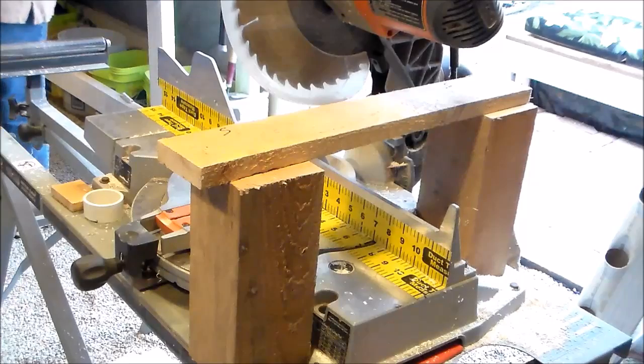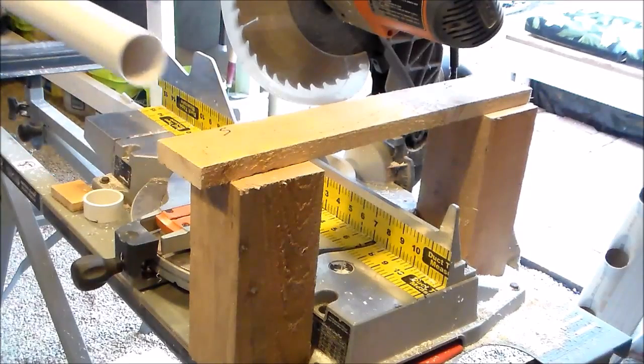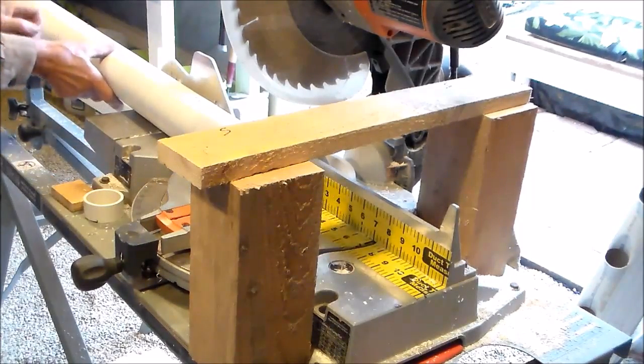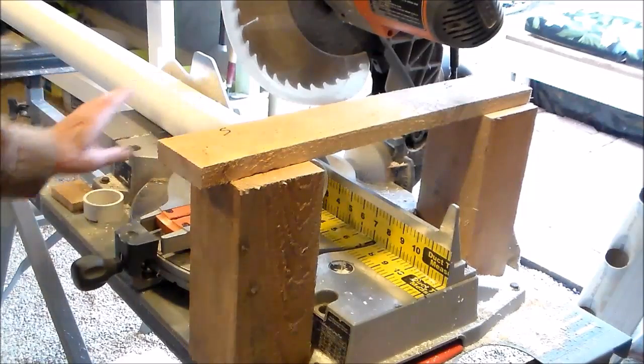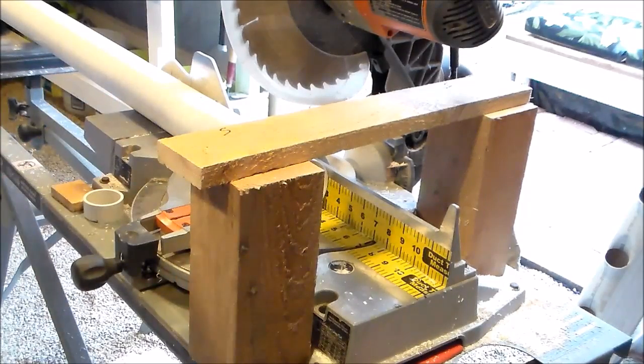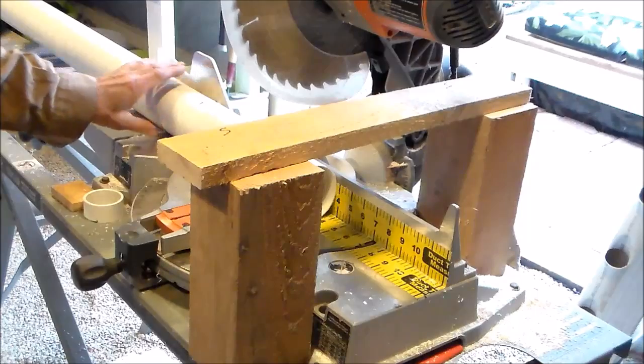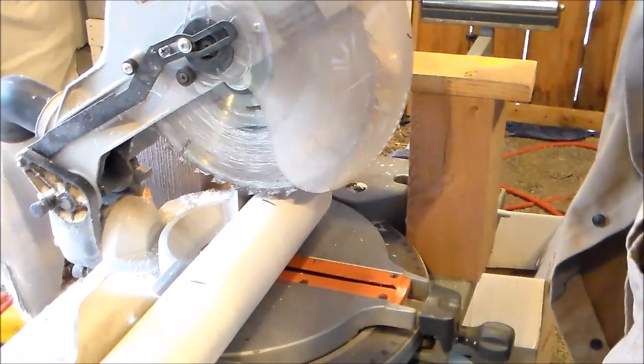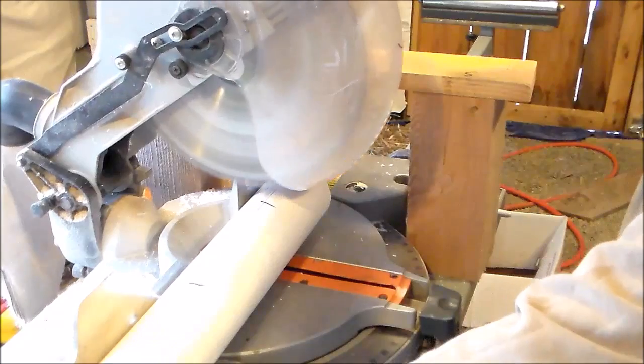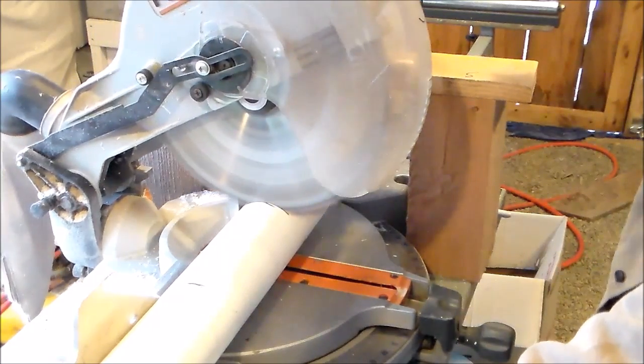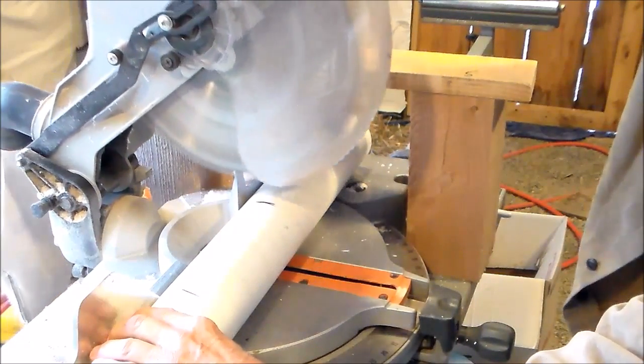Now I set it up for 8 slots or 8 cups for each grow tower. You can place these slots much closer if you like depending on what you're planning on growing. I have mine set at about 8 inches apart.